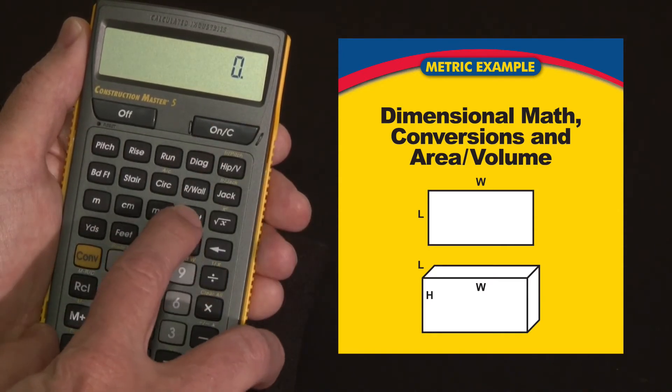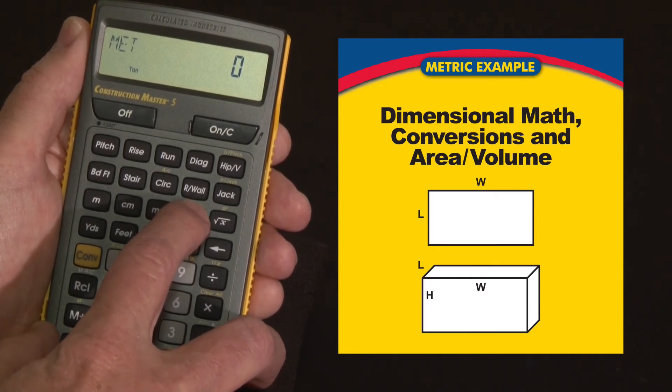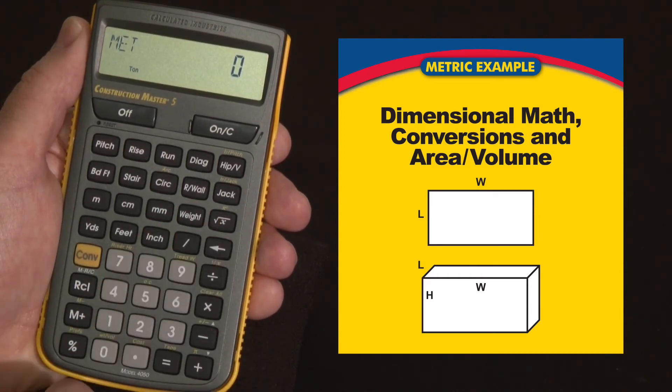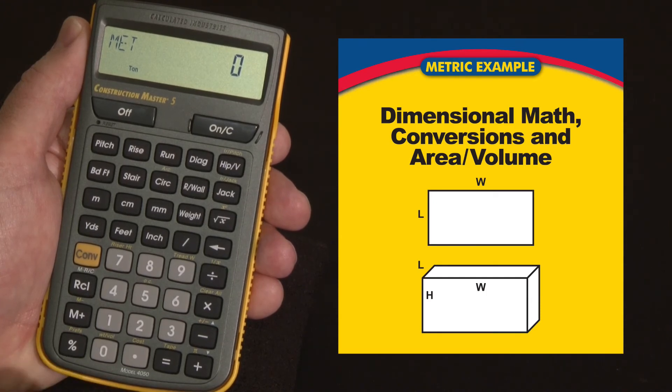There's also conversions for weights: we have kilograms, tons, pounds, metric tons, and also a weight per volume conversion key when you have different densities and different volumes. You can calculate, for instance, 1.75 metric tons per cubic meter.